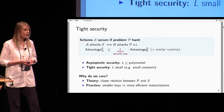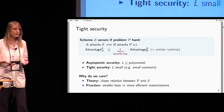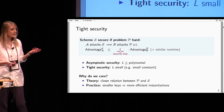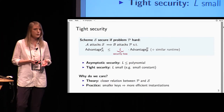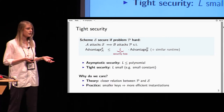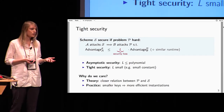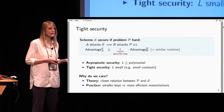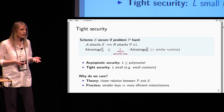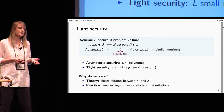Why do we care about tight security? There are two reasons. In theory it's interesting because it gives a closer relation between the scheme and the underlying problem, so it's interesting to think about constructions and impossibility results. For practice it's interesting because it gives smaller keys — we have to account for the security loss in the key size, and therefore more efficient instantiations. In settings where the loss depends on the number of users, and we can have a huge number of users, this can actually make a real difference.